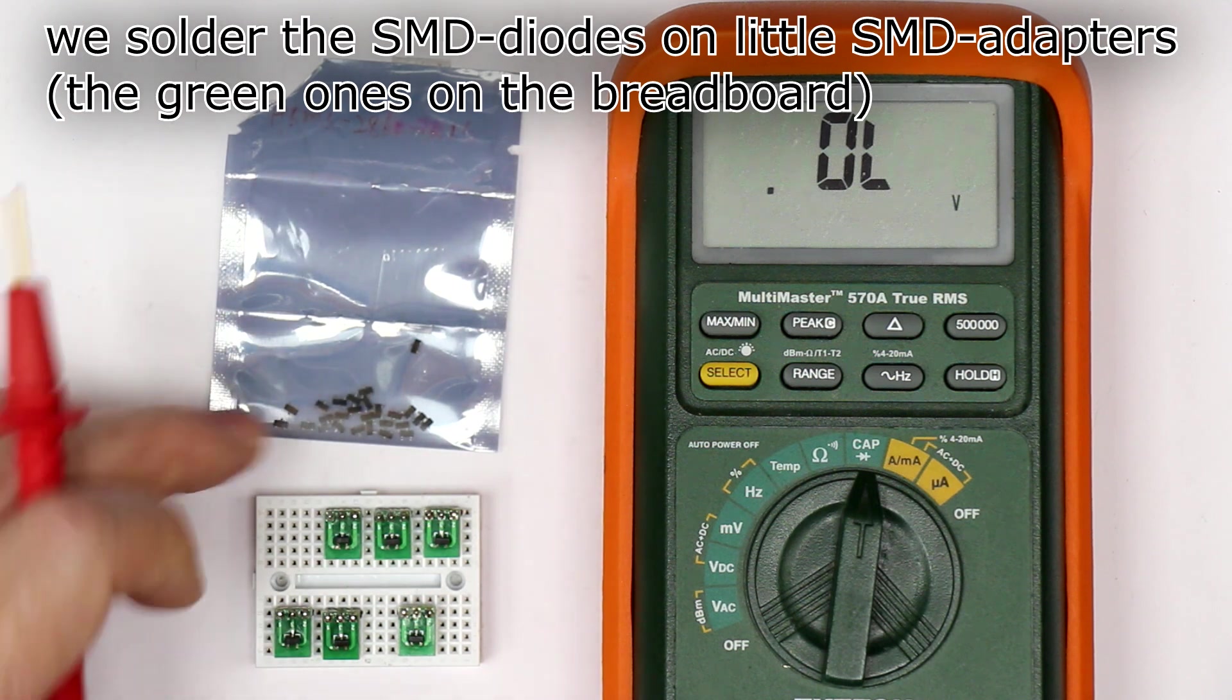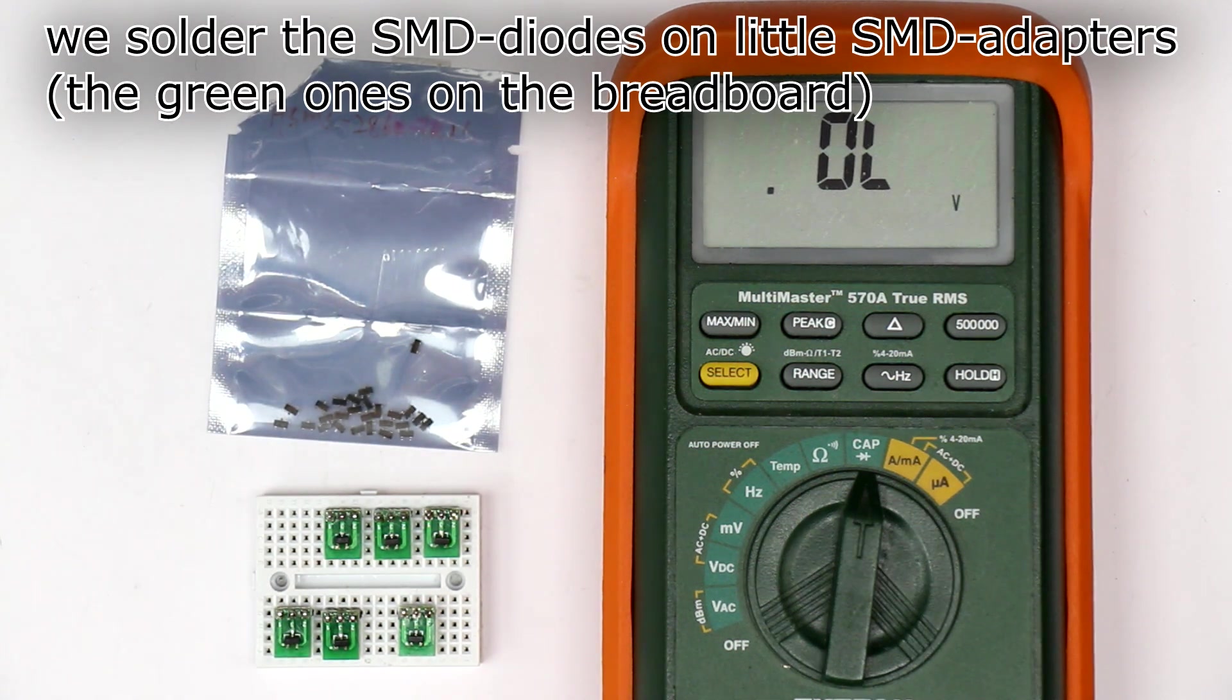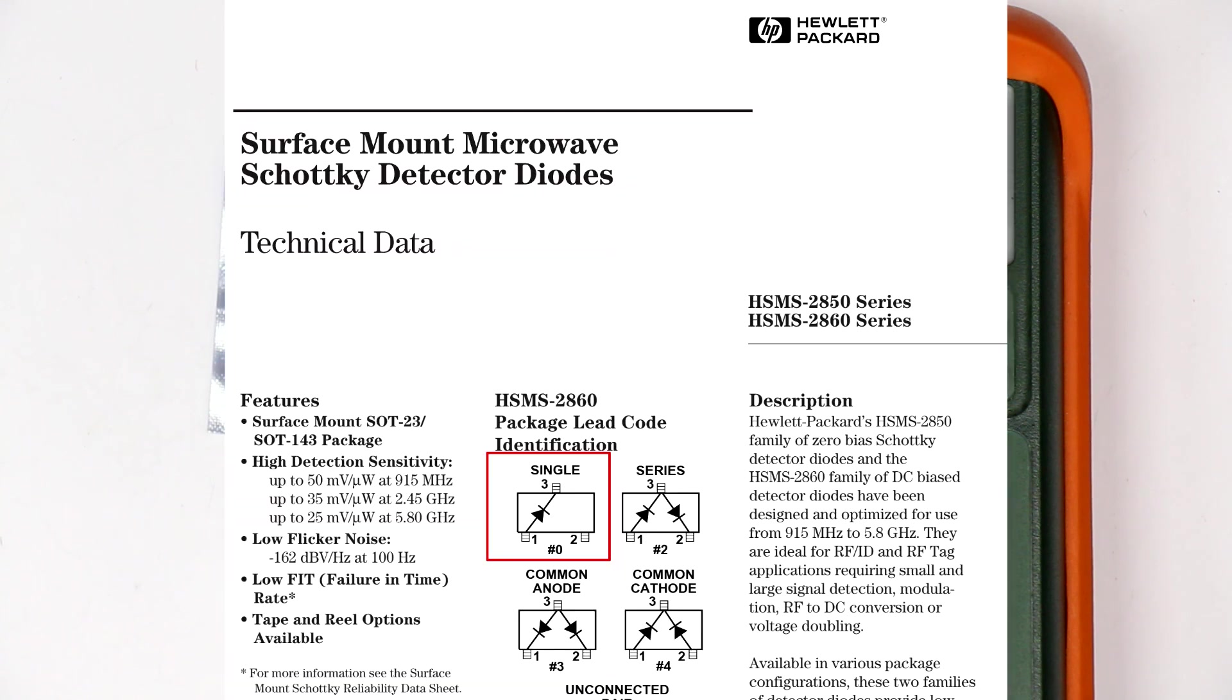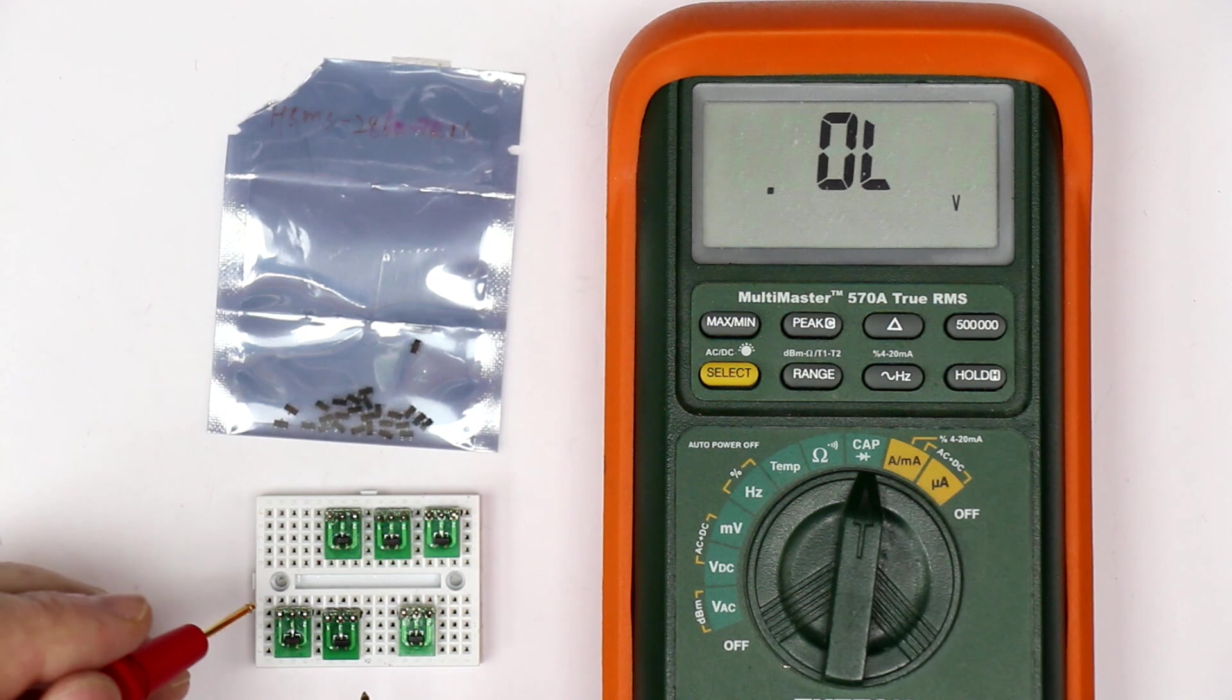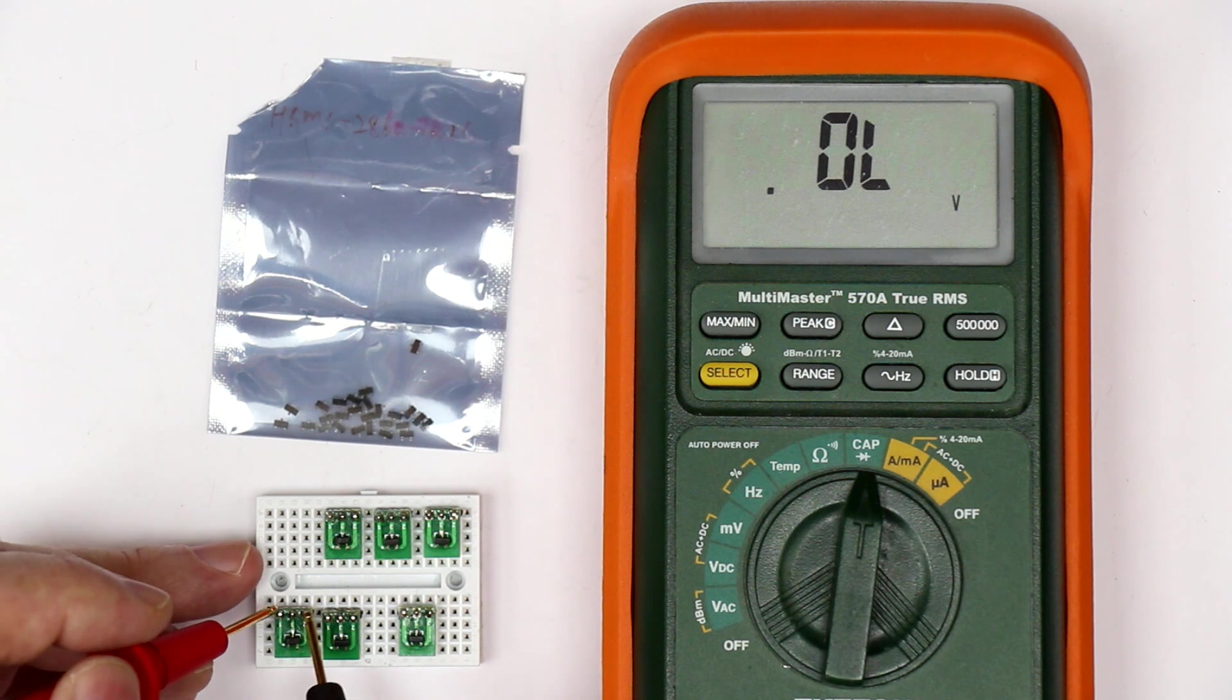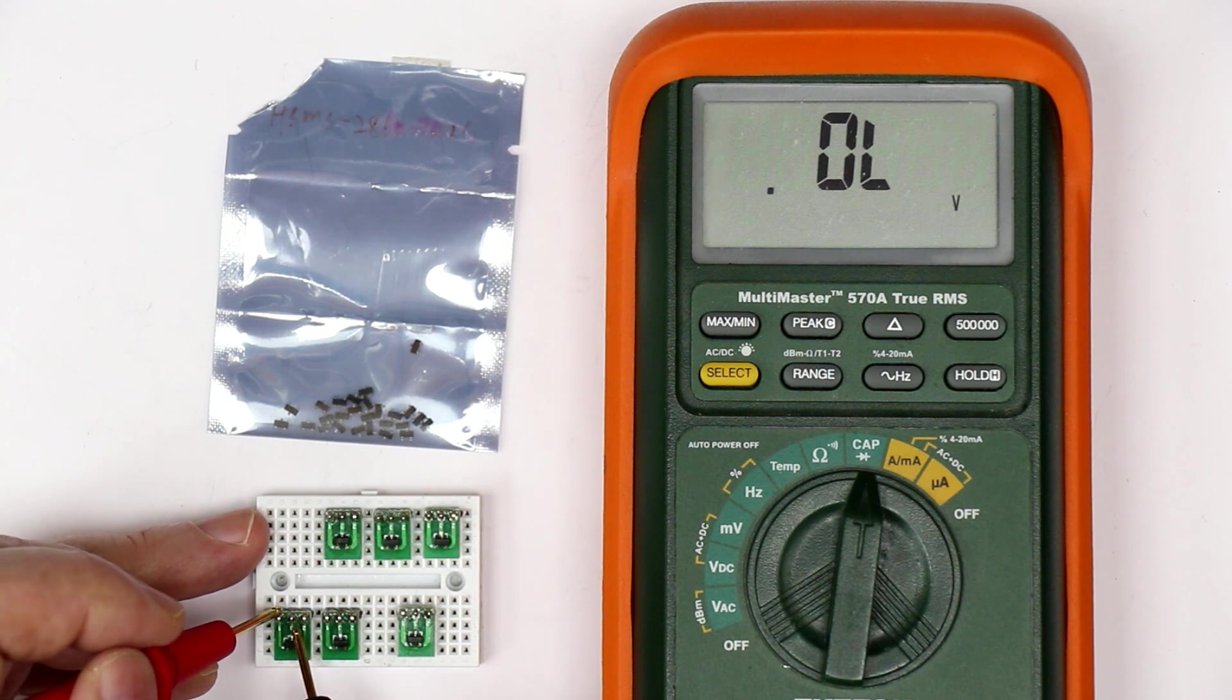As you can see from the data sheet, the diode connection is from pin 1 as anode going to pin 3 as cathode. Here I've soldered a few of the first batch on little adapter boards. Now let's check in diode mode if we get the typical 0.3 volts from pin 1 to pin 3.